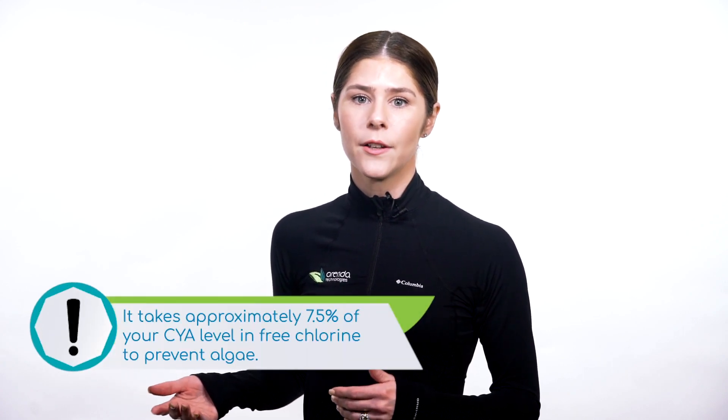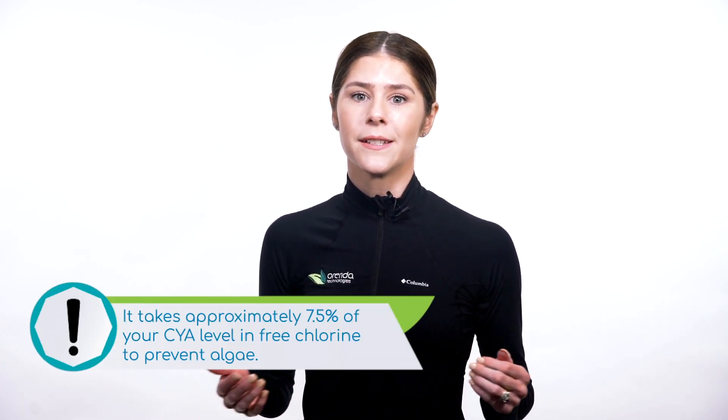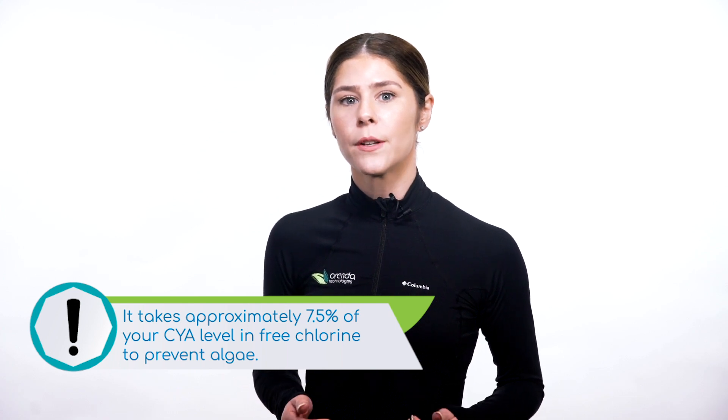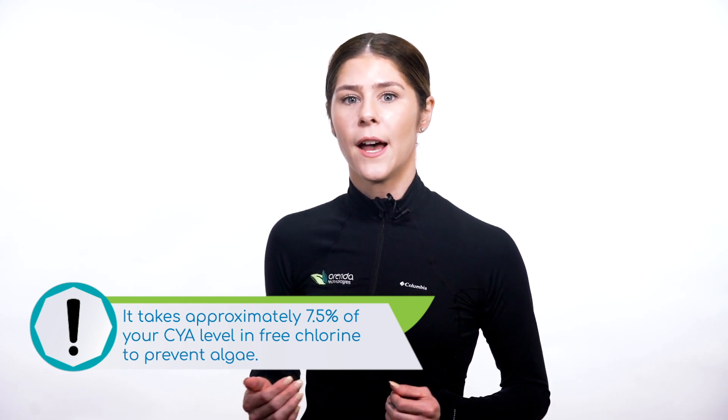Another example is the reduction factor for preventing algae. It takes approximately 7.5% of your CYA level in free chlorine to prevent algae — unless you are able to keep phosphate levels low, below 500 parts per billion. In that case, we are told the ratio could be lower, maybe even half, though we are awaiting research to confirm that.